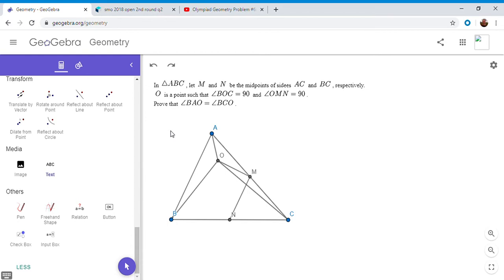And so one way I'm going to do this is to construct a point such that point D, such that BAOD is a parallelogram, because then if there were a true angle BAO would be angle BDO, and we want to show that that's angle BCO. So we'd want to show that we'd have a cyclic quadrilateral. So that point might be useful, so I'm going to construct it.